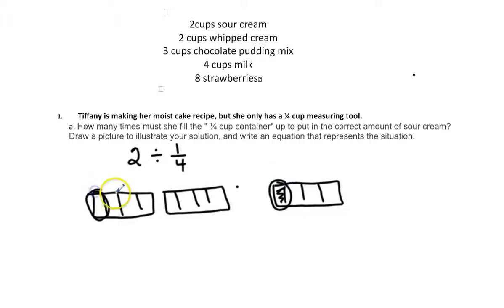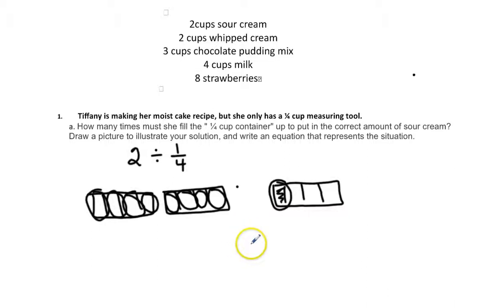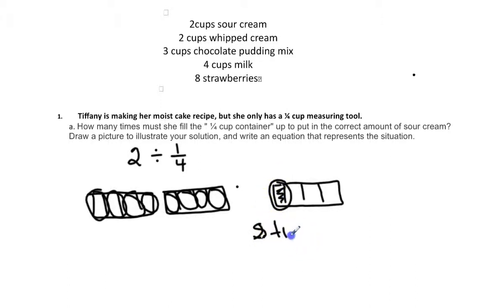So I represent my picture: I've got one, I've got two, and then I divide them to represent the fourths. Here's my one fourth. Each one of these is colored in, and I separate them into fourths. I want to know how many of these can fit in here — one, two, three, four, five, six, seven, and eight. So we could fill it up eight times. Our number sentence would be two divided by one fourth equals eight.